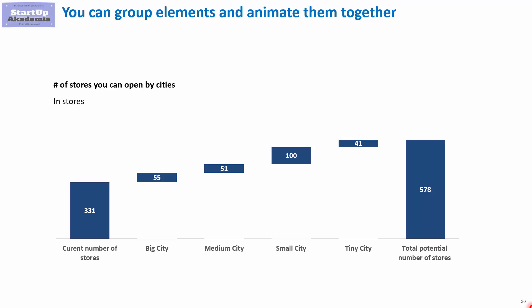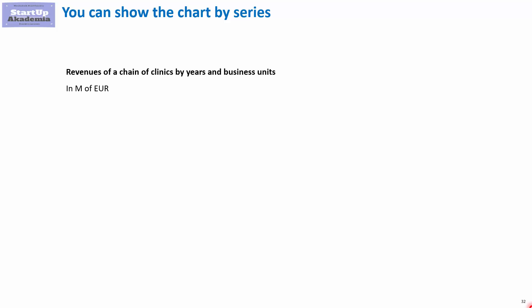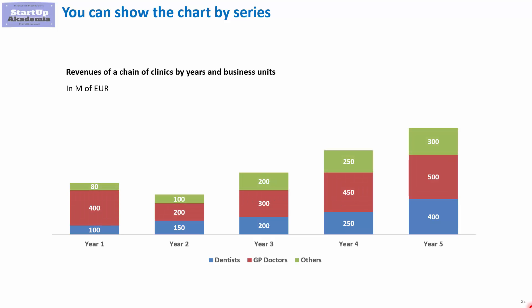To see the full capacity of PowerPoint chart animation, let's use a more complicated stacked column chart. We've got three series shown over five years, and every data series is responsible for a different business unit. The first option is to show it by series — so first we show dentists, then doctors, then others.